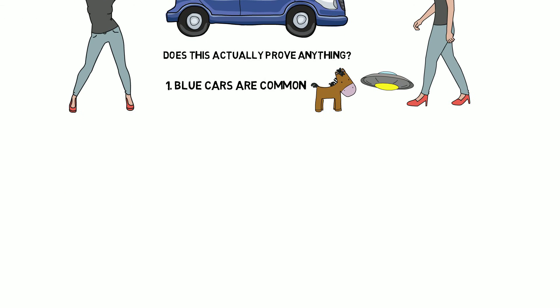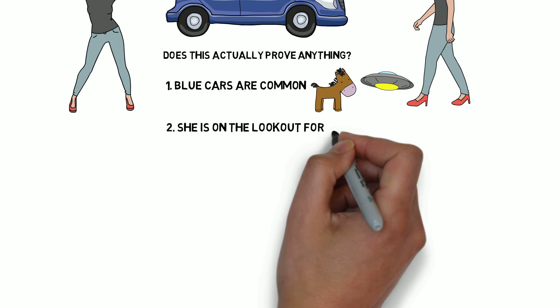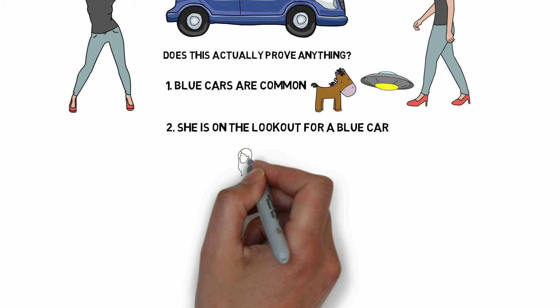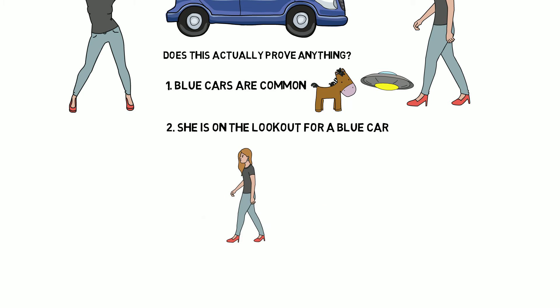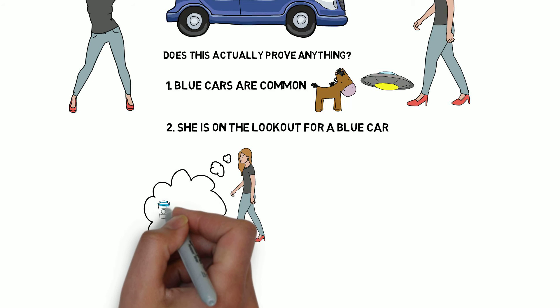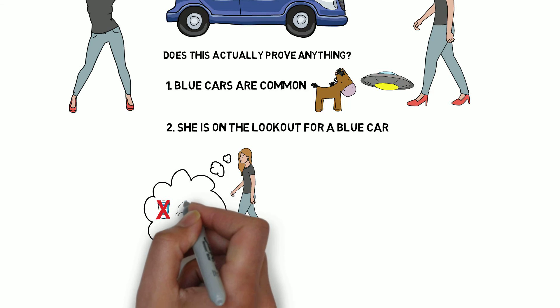Secondly, we also think about where Jane is paying attention. Unlike most other mornings where she's thinking about the fastest way to get her first cappuccino for the day, today her brain is on high alert to scan the environment for a blue car. Even if she forgets for a moment that she's looking for a blue car, her subconscious brain is primed to keep an eye out.